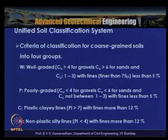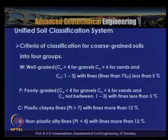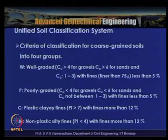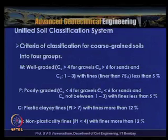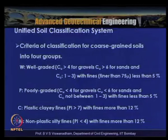The criteria for classifying coarse-grained soils: well-graded (W) requires Cu ≥ 4 for gravels or Cu ≥ 6 for sands, and Cc between 1 and 3, with fines less than 5%. Poorly graded (P) has Cu < 4 for gravels or < 6 for sands, and Cc not between 1 and 3, with fines less than 5%. Silty fines (M) have PI < 4 with fines more than 12%; plastic clay fines (C) have PI > 7 with fines more than 12%.